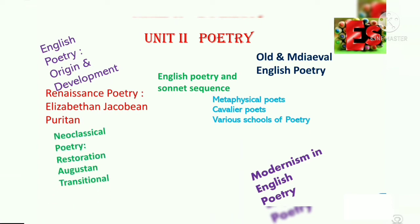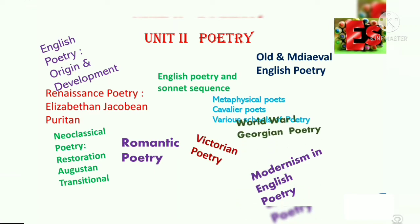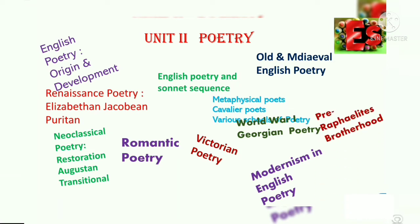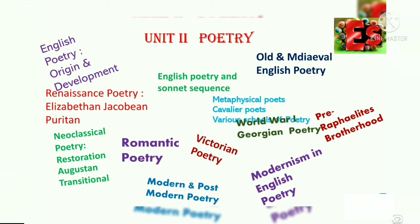Neoclassical poetry — Restoration, Augustan, and Transitional poetry. Romantic poetry, Victorian poetry, World War I Georgian poetry, Pre-Raphaelite Brotherhood, Modern and Post-Modern poetry, and English poetry Modernism.